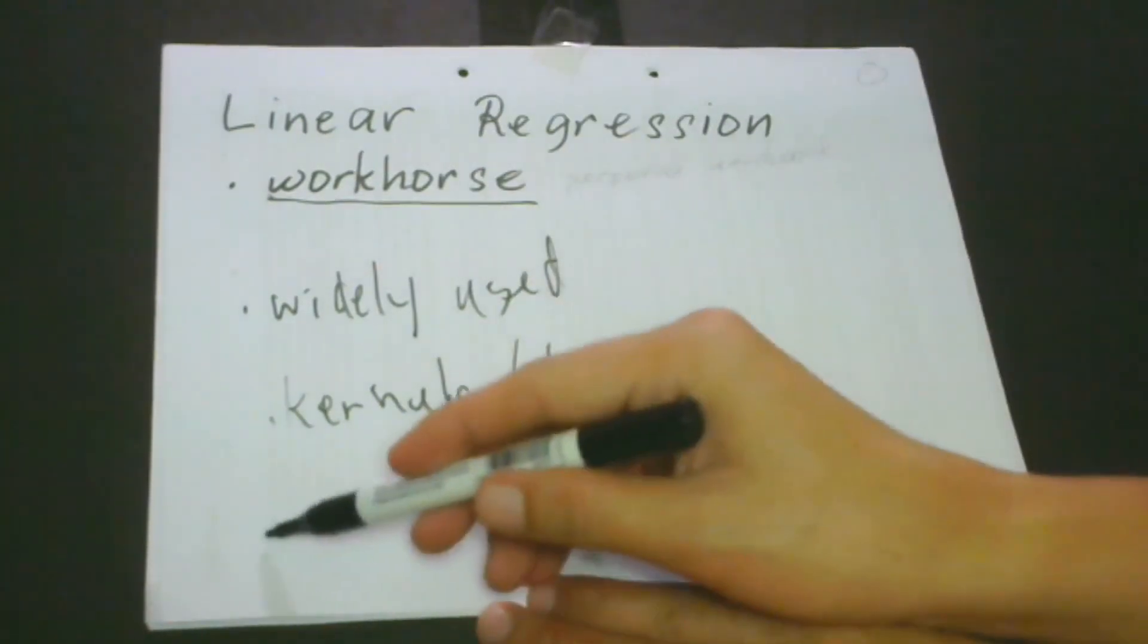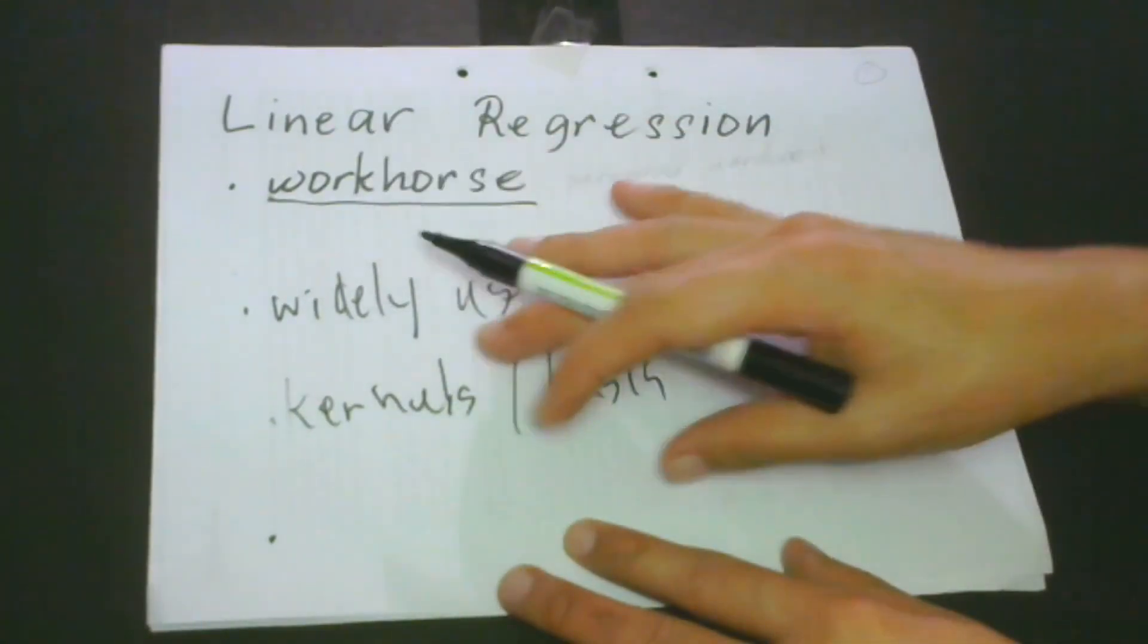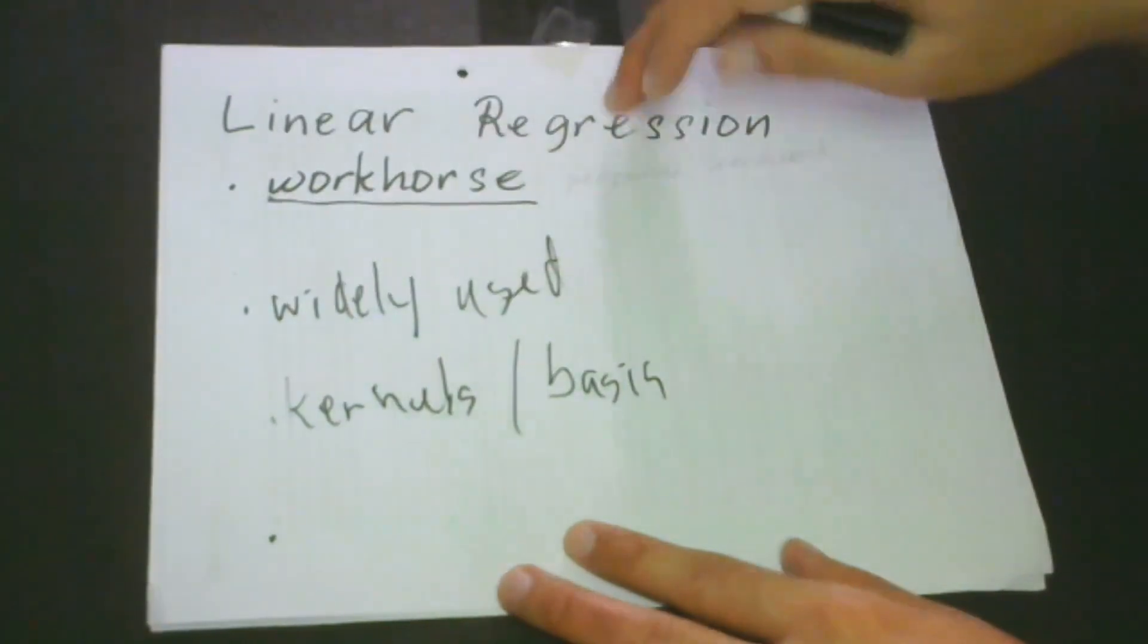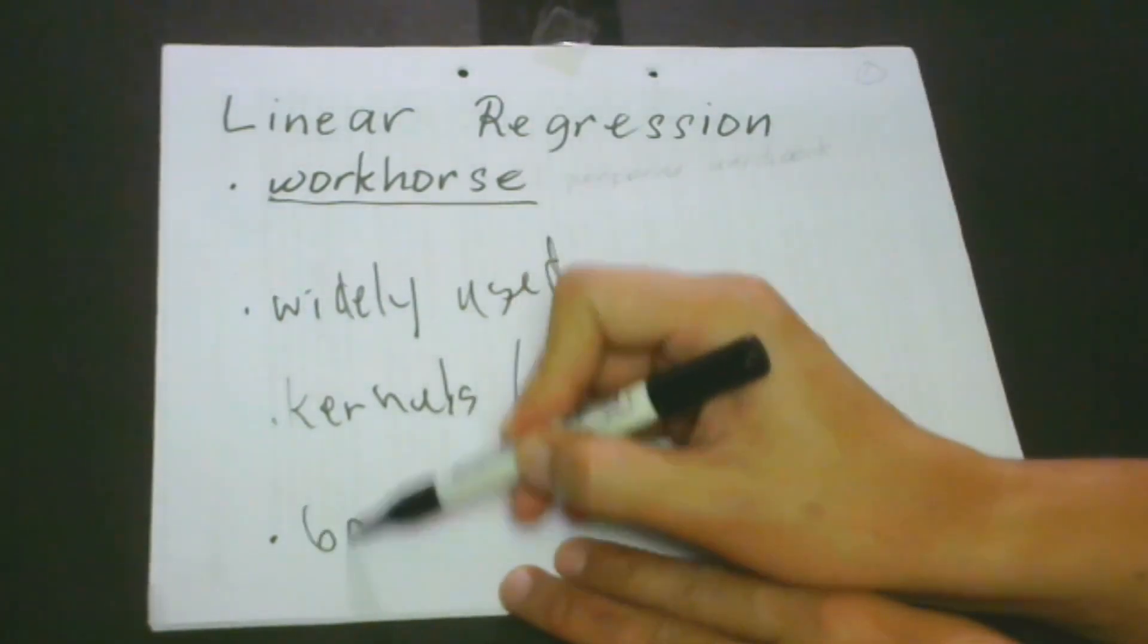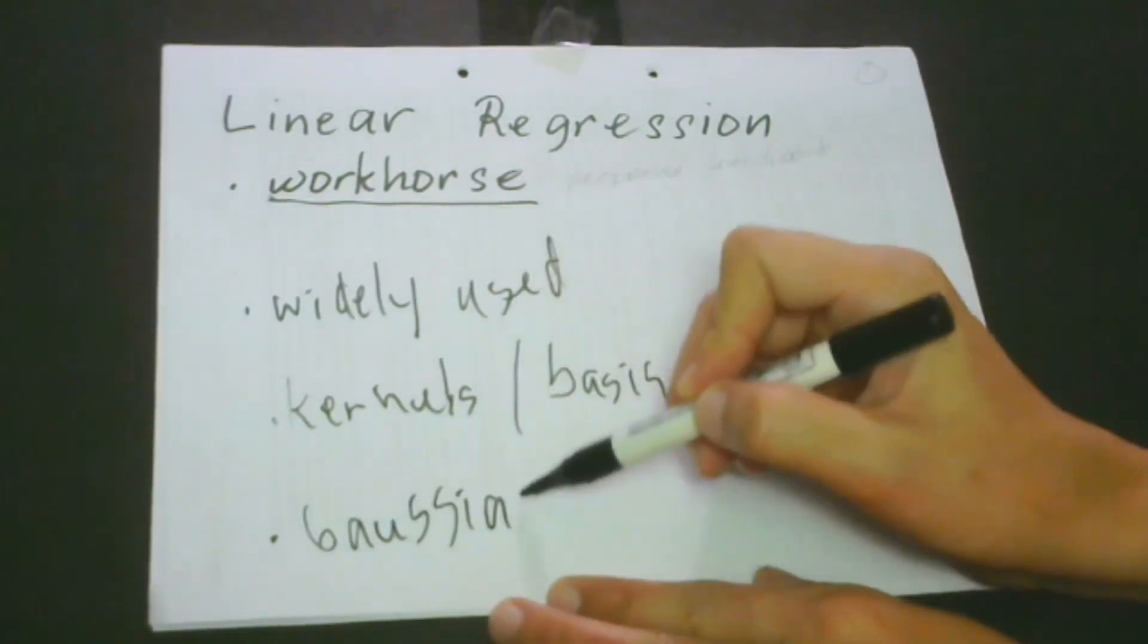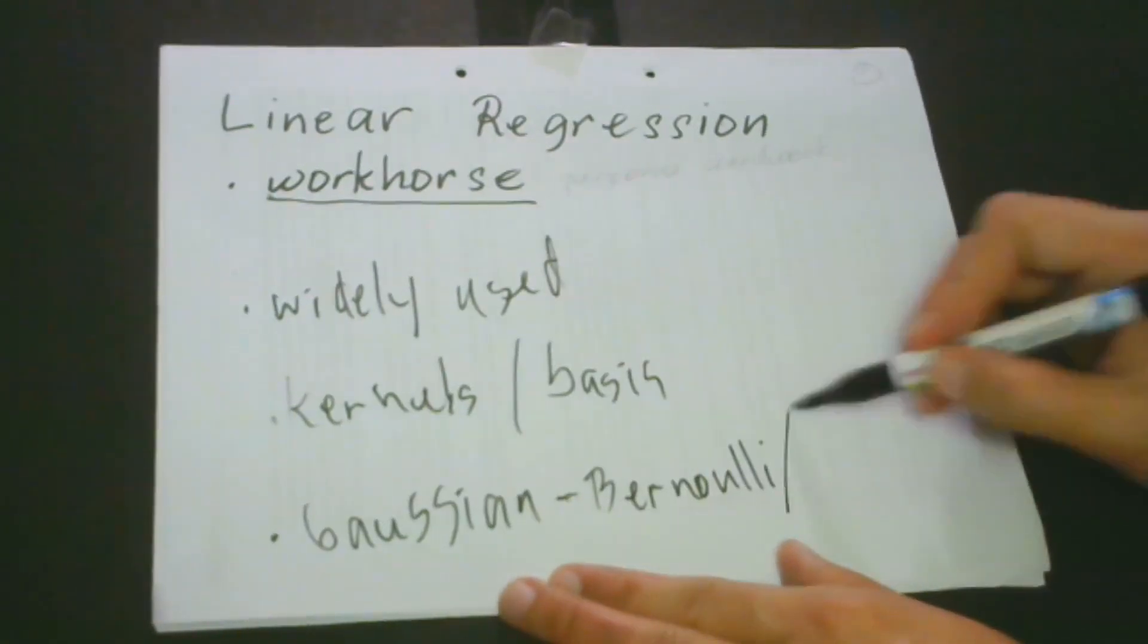And also, one more is that, although we're going to have later the concept about the Gaussian in relation to linear regression, I would like to say this, that when we're going to replace the Gaussian with Bernoulli or even the multinoulli distribution,